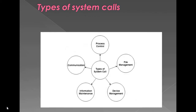We shall see the different types of system calls. There are mainly five types: process control, file management, device management, information maintenance, and communication. These five system calls relate to the five different services provided by the operating system.